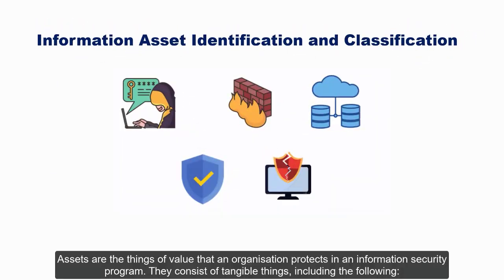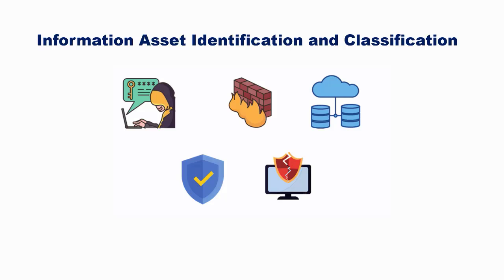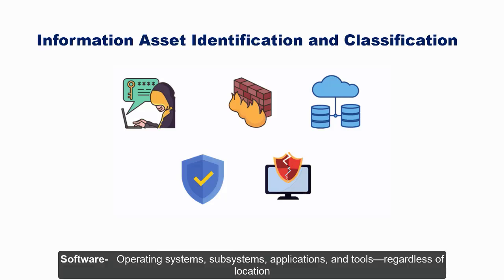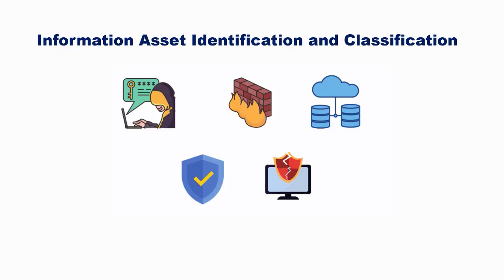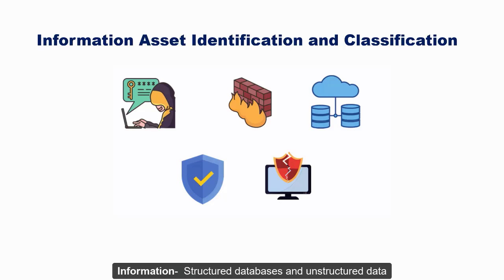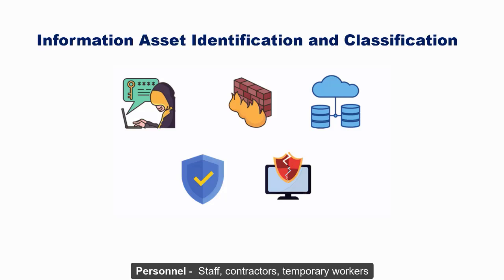Assets are the things of value that an organization protects in an information security program. They consist of tangible things including: information systems hardware such as servers, laptops, tablets, mobile devices, and network devices; software including operating systems, subsystems, applications, and tools; virtual assets such as operating system guests and containers; information including structured databases and unstructured data; facilities such as data centers, development centers, and business offices; and personnel including staff, contractors, and temporary workers.